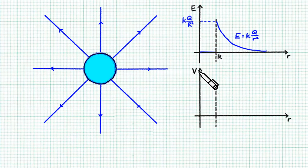Okay, now let's move on to the potential graph. Again, outside the sphere, the charged sphere looks like a point charge at the center. So the potential is going to vary according to the formula for a point charge, V equals KQ over R.